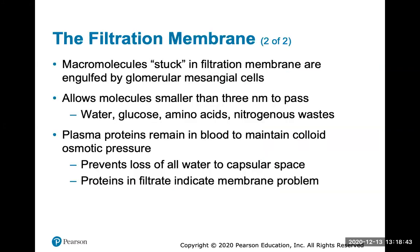Macromolecules will get stuck in the filtration membrane and be engulfed by glomerular mesangial cells. Only molecules smaller than three nanometers can pass through — water, glucose, amino acids, and other nitrogenous wastes. Plasma proteins remain in the blood to maintain an osmotic pressure gradient, preventing loss of all water to the capsular space. Proteins in the filtrate indicate a membrane problem, usually at the glomerulus level, meaning substances too large were allowed to pass through.